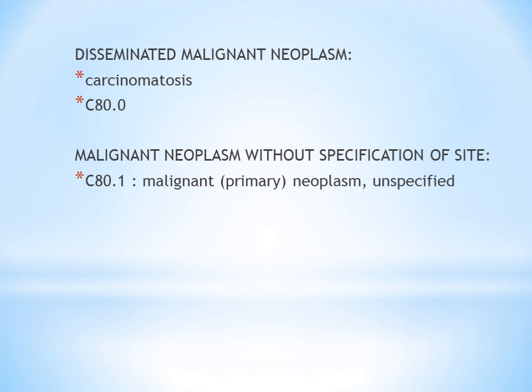The next guideline is malignant neoplasm without specification of site. If the documentation states malignant neoplasm of an unknown source, or the primary source is unknown, you give code C80.1 — malignant primary neoplasm unspecified. If the site is not specified, you can give C80.1.